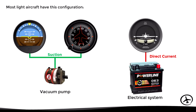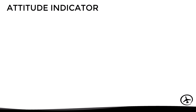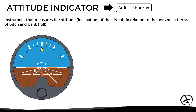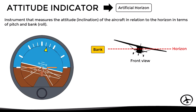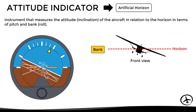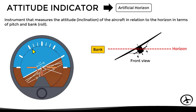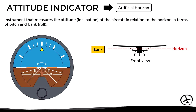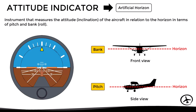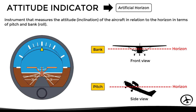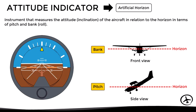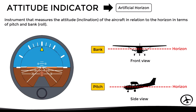The attitude indicator, also known as the artificial horizon, is an instrument that measures the attitude of the aircraft in relation to the horizon in terms of pitch and bank. The bank angle is the inclination of the wings in relation to the horizon, as indicated on the instrument. The pitch angle is the inclination of the nose of the aircraft in relation to the horizon.